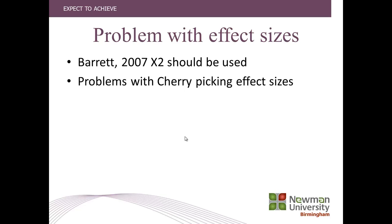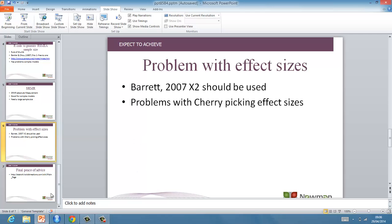The last point is that there is some controversy. Barrett, 2007, argued that because model fit indices are all calculated in different ways, chi-squared is the only one you should really use, and there are often problems with cherry-picking. But personally, if you want to get published in journals, a lot of them prefer structural equation modeling and prefer you to report various effect sizes and R calculations, so I wouldn't worry about that too much.